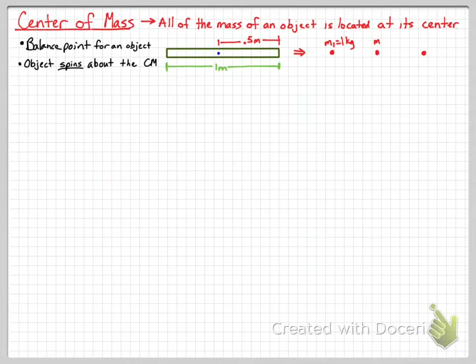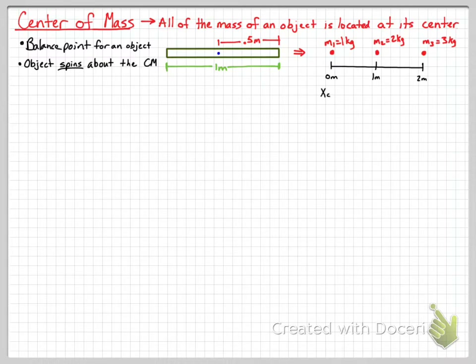Typically, what the College Board is interested in finding is the center of mass of a system of objects. So what we have here is mass 1, mass 2, and mass 3, all of them different masses, set up at certain distances from each other.